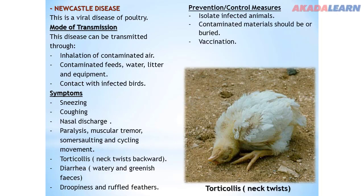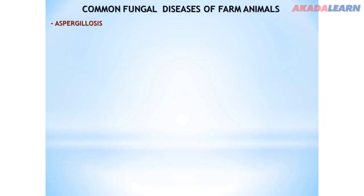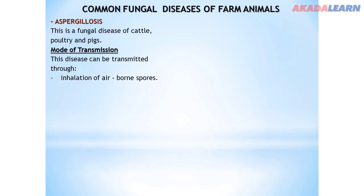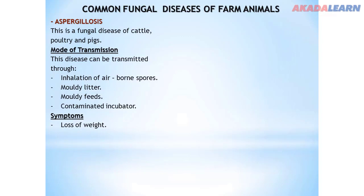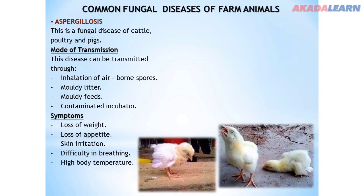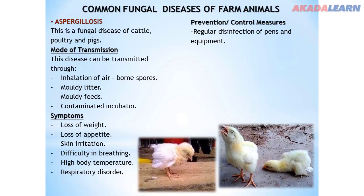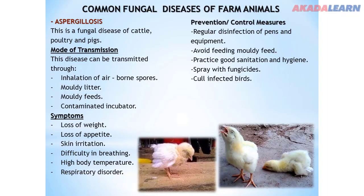Now let's look at a common fungal disease: aspergillosis. This is a fungal disease of cattle, poultry, and pigs. Modes of transmission: inhalation of airborne spores, moldy litter, moldy feeds, and contaminated incubators. Symptoms: loss of weight, loss of appetite, skin irritation, difficulty in breathing, high body temperature, and respiratory disorder. Control measures: regular disinfection of pens and equipment, avoid feeding moldy feed, practice good sanitation and hygiene, spray with fungicide, and cull infected birds. Do not use moldy or wet litter.